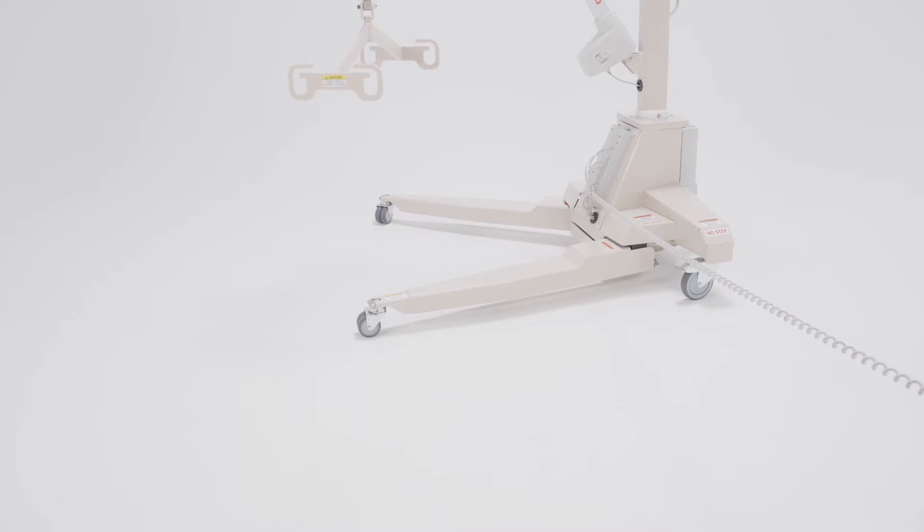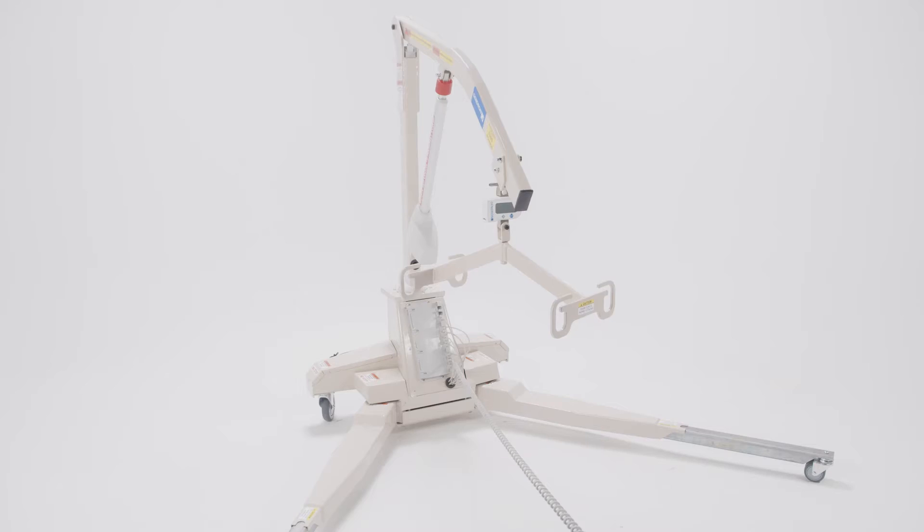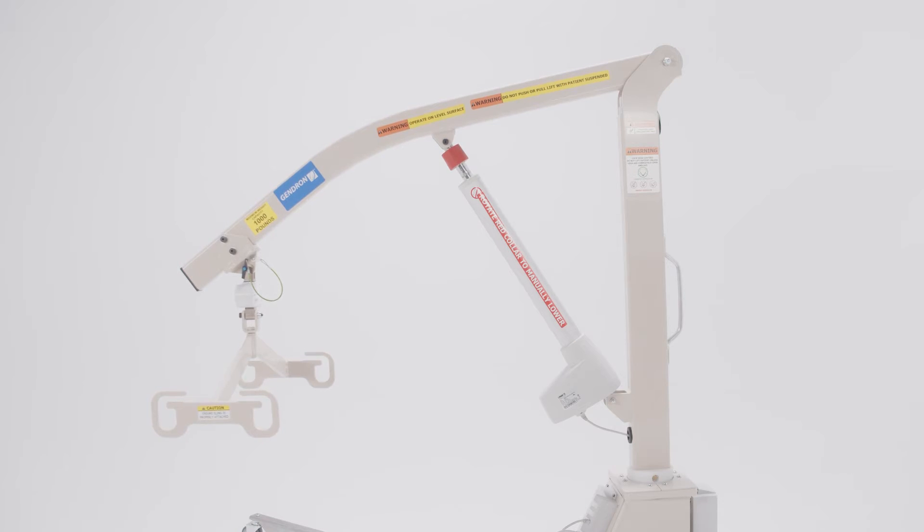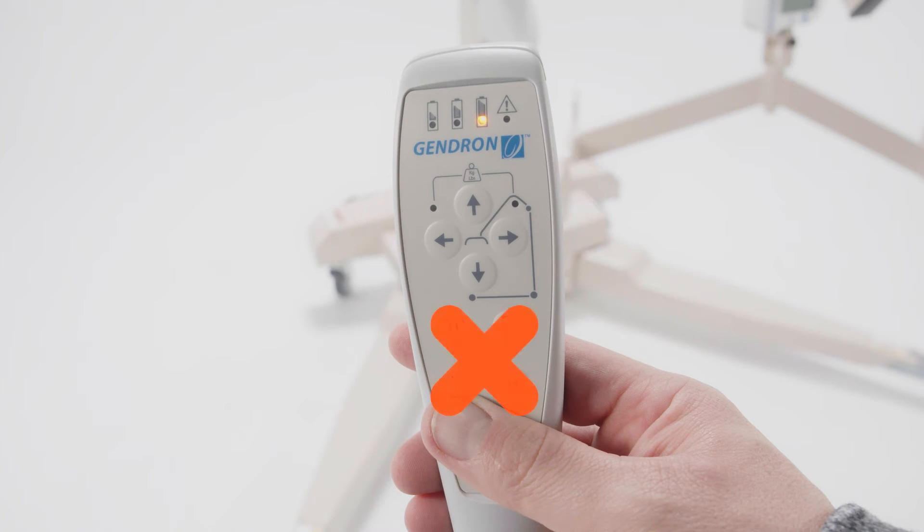For the leg functions to open or close and extend or retract, the mast rotation must be at home position and the lifting arm must be completely lowered. If either of these two conditions are not met, no leg function can occur.